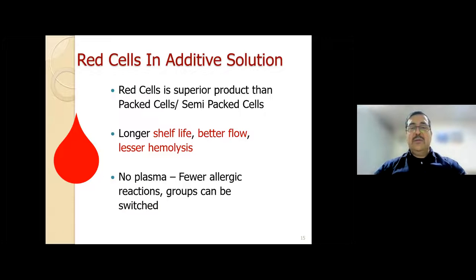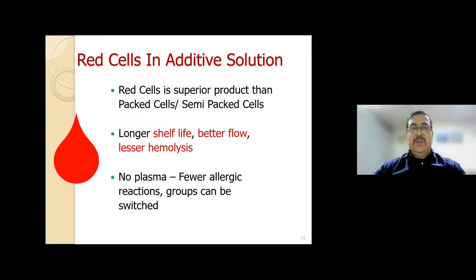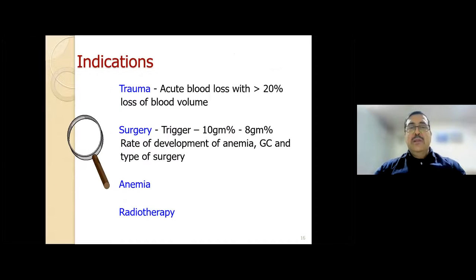Since there is no plasma in red cell in additive solution, there are fewer allergic reactions because most reactions are to plasma proteins, and groups can be switched. For example, an AB group recipient can receive AB, A, B, or O donor blood. There is no minor cross-match required. These are the advantages of red cell in additive solution. Practically, almost every hospital now uses this product. Indications are trauma (more than 20% blood loss), surgery, anemia, and radiotherapy.